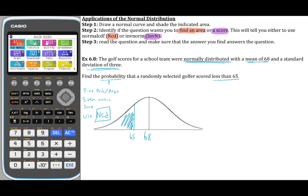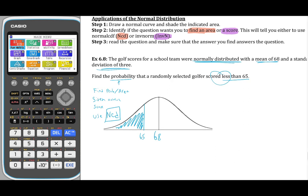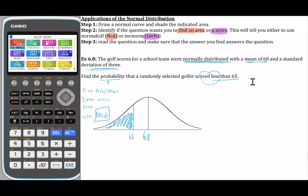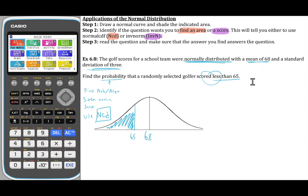We know that the area is going to be to the left because it says less than 65. Since it's to the left of 65, we need our lower bound and our upper bound. Our upper bound is just going to be 65. Our lower bound is technically negative infinity. We can't type negative infinity into the calculator, so we're going to use negative 1 times 10 to the 99th power, and I'll show how to type this in.